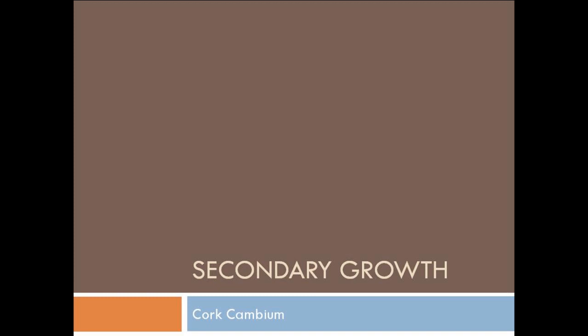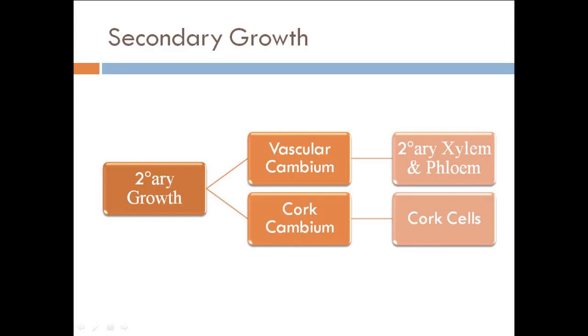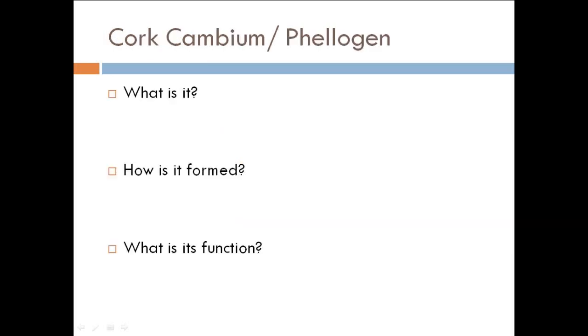The major lateral meristems are the vascular cambium and cork cambium. The vascular cambium cuts off secondary xylem and phloem, which we are not going to talk about. The only thing is secondary xylem is cut on the inside and secondary phloem is cut on the outside. We are going to talk about cork cambium, which produces cork cells and also many other things.